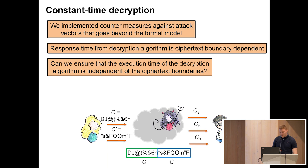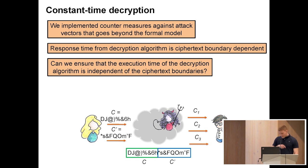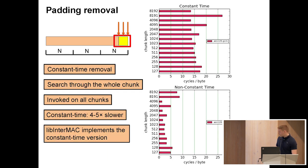The thing the adversary can do is measure the response time from Bob's decryption algorithm, and this is not captured by the formal security model. If this response time is somehow ciphertext boundary dependent, then the adversary might be able to delineate the ciphertext boundaries. To combat this, we have to make sure that the execution time of the decryption algorithm is independent of ciphertext boundaries.